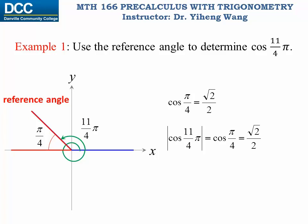Now all we need to determine is whether to add the negative sign or not. Since this angle has a terminal side that falls in the second quadrant, its cosine value is indeed negative, so we do need to add the negative sign. Therefore cosine(11π/4) equals negative √2/2.